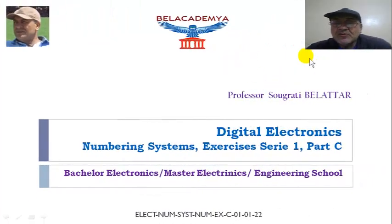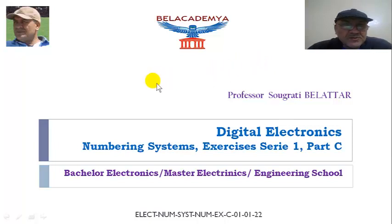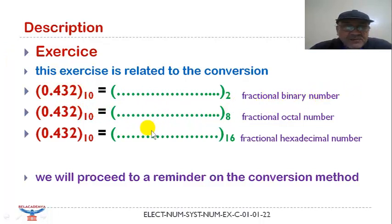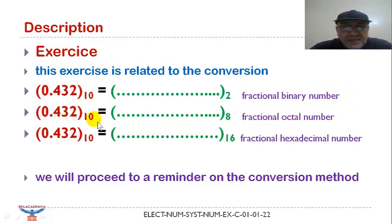Hello everyone, you are welcome to this video on digital electronics course. Today we are going to work on numbering systems, exercise 31 part C. This exercise is related to the conversion of a fractional decimal number to fractional binary number, fractional octal number, and finally fractional hexadecimal number.